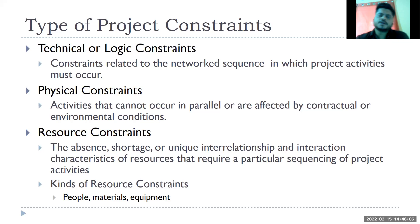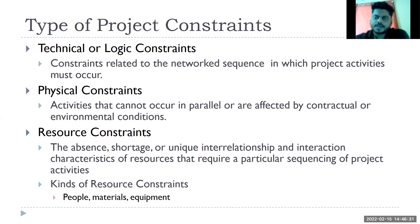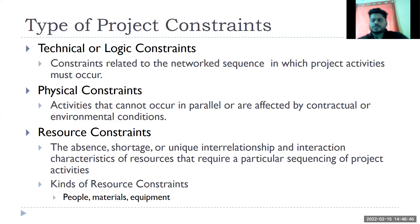Resource constraints — which we'll discuss today — involve shortages of people, materials, or equipment. When you require those resources, they may not be available. How do you plan for that? How do you keep a backup? These are the top three types of constraints applicable to any project, whether traditional waterfall or agile methodology.